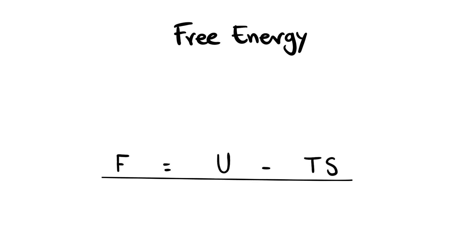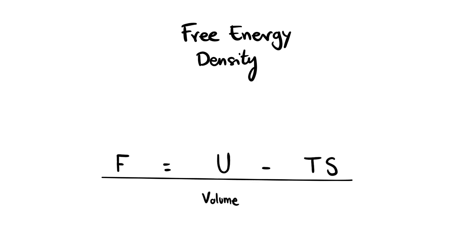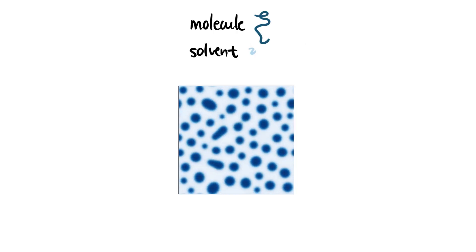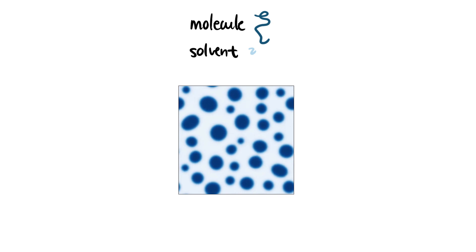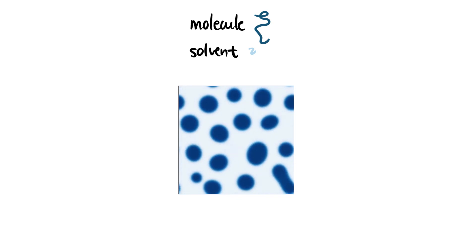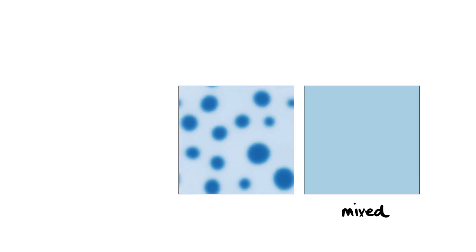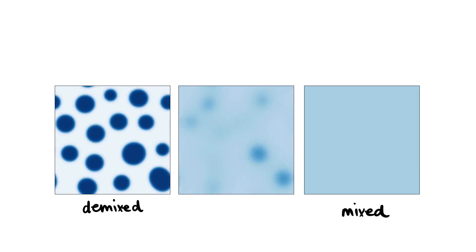We use the free energy per unit of volume, known as the free energy density. To make sense of all this, let's think of a mixture of one type of molecule in a solvent. This is a computer simulation of such a system — the system can be in a mixed or a demixed state.